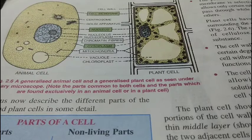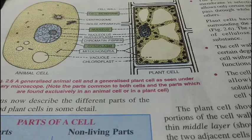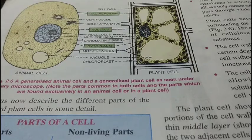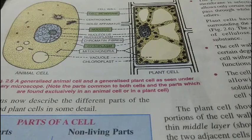The Golgi body in animal cells and dictyosomes in plant cells are the same structure. In animal cells it is called the Golgi body or Golgi apparatus, and in plant cells it is termed dictyosomes. They are the delivery system of the cell, particularly concerned with the secretion of enzymes and hormones.